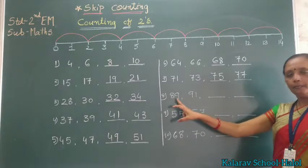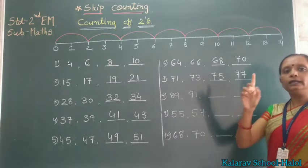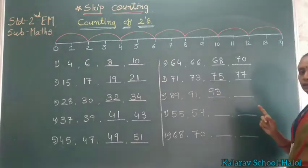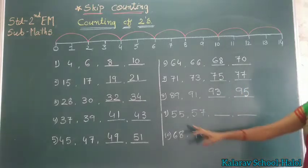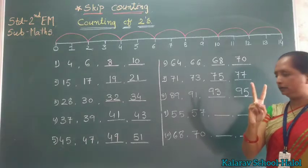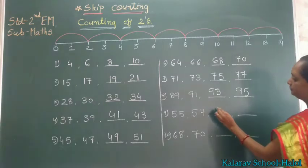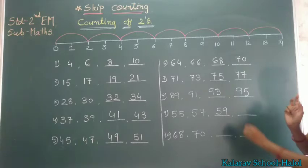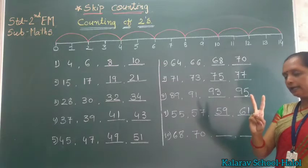89 ke baad, 90, 91. Then 92, 93, 94, 95. Then 55 ke baad, 56, 57. Then 58, 59. Then 59 ke baad, 60, 61. Then 61, 68, 69, 70.